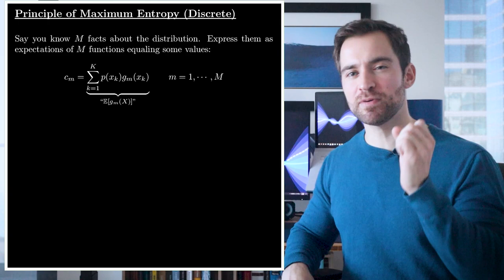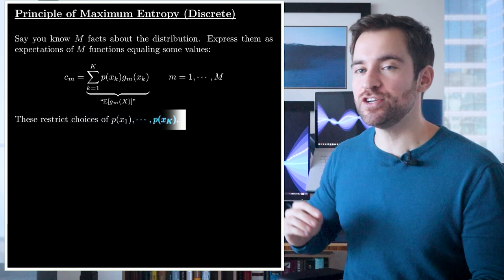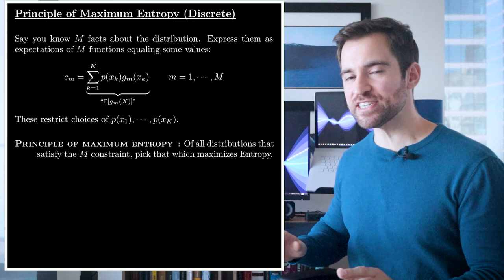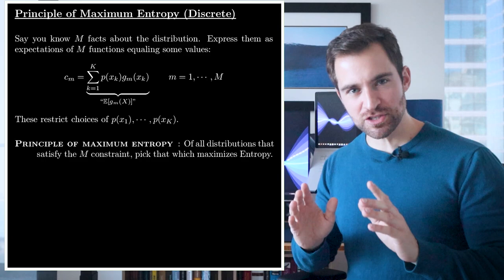To state it mathematically, if you know M facts about a distribution, then express them as expectations of M functions equaling some values. We'll call each function gm and the value of their expectation cm. Just trust you can encode a lot of information this way. Of all possible distributions, only some, if any, satisfy these equations. So, it restricts your choice of distribution. Now, we can state the principle. Of all distributions that satisfy your equations, pick that which maximizes entropy.